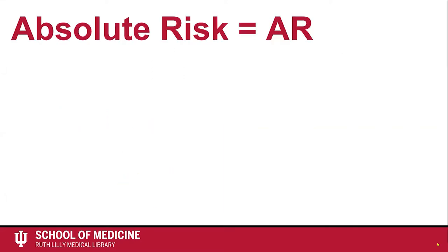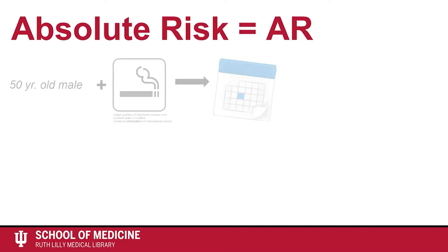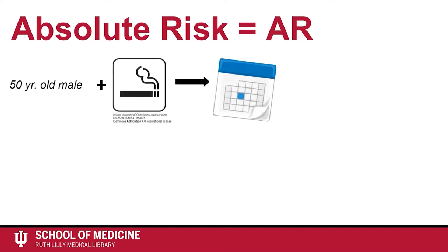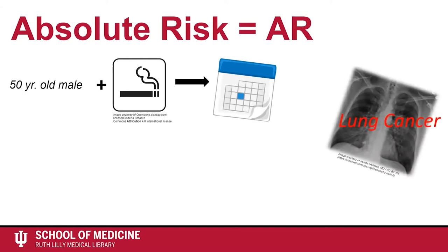Absolute risk is the chance of an event happening over a period of time. For example, this could be the chance that a 50 year old male smoker has of developing lung cancer this year.